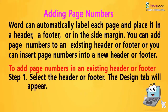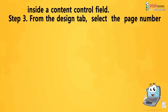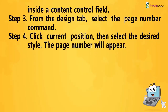To add page numbers in an existing header or footer: Step 1: Select the Header or Footer. The Design tab will appear. Step 2: Place the insertion point where you want the page number to be. You can place it anywhere except inside a Content Control field. Step 3: From the Design tab, select the Page Number command. Step 4: Click Current Position, then select the Design Style. The page number will appear.